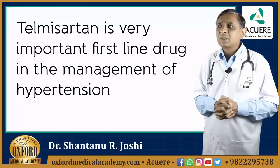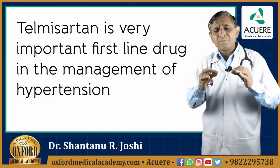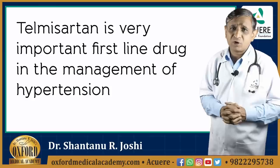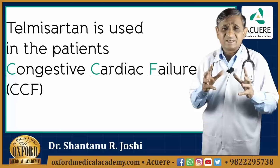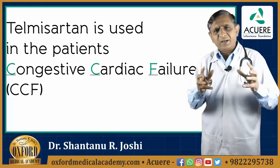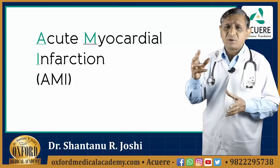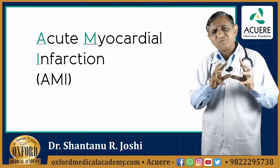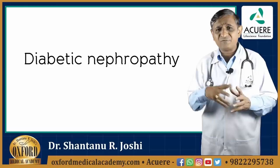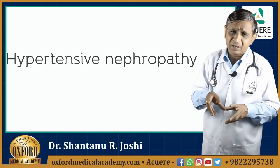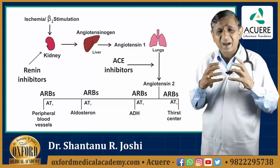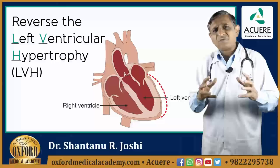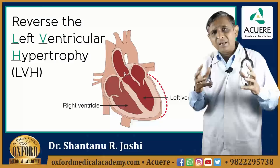The uses of Telmisartan: Telmisartan is a very important first-line drug in the management of hypertension — this is the primary indication. Telmisartan is also used in patients with congestive cardiac failure and is a very common drug prescribed after acute myocardial infarction. It is a very safe drug to be used in diabetic nephropathy, hypertensive nephropathy, or nephropathy of any other origin. Research with ACE inhibitors and ARBs has shown that these drugs have the capacity to reverse left ventricular hypertrophy, which is a common complication of hypertension.